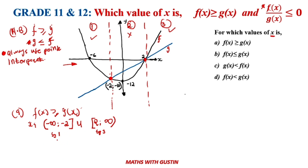In inequality notation, you say: x ≤ −2 or x ≥ 2. Basically, starting from positive two going to positive infinity, f(x) is greater than g(x); and starting from negative infinity going to negative two, f(x) is also greater than g(x).